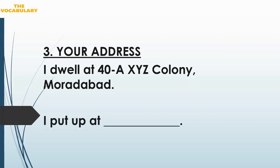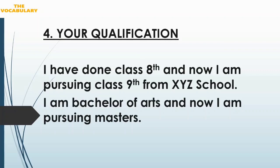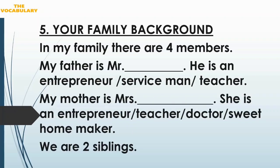After telling your address, you have to tell your qualification. You can say: 'I have done Class 8th and now I am pursuing Class 9th from XYZ School.' Here, 'pursuing' means jo aap currently apni studies mein kar rahe hain. If you have done your Plus Two aur aap graduation kar rahe hain, you can say: 'I am pursuing my graduation.' Or if you are doing masters: 'I am Bachelor of Arts and now I am pursuing Masters.' Jo bhi cheez aap abhi current mein kar rahe hain, usse pehle 'pursuing' use kar sakte hain.